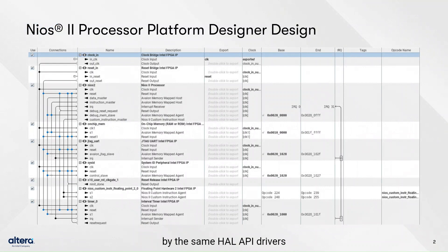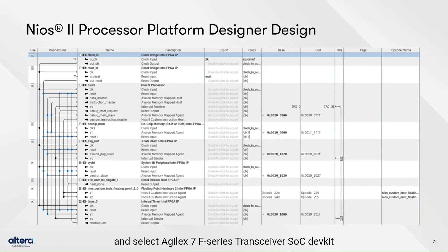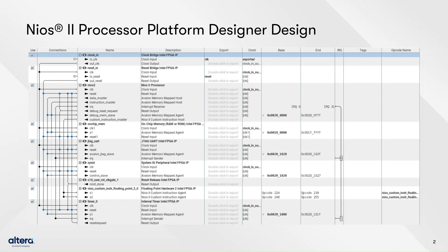You can create a new project by using the New Project Wizard and select the Agilex 7 F-Series Transceiver SoC Dev Kit for this project. Open a new Platform Designer to create this QSYS design.